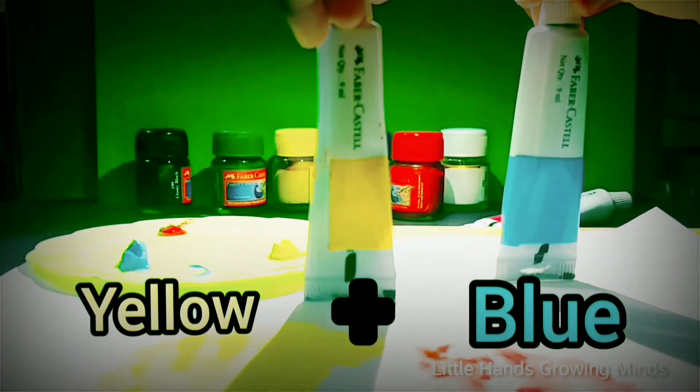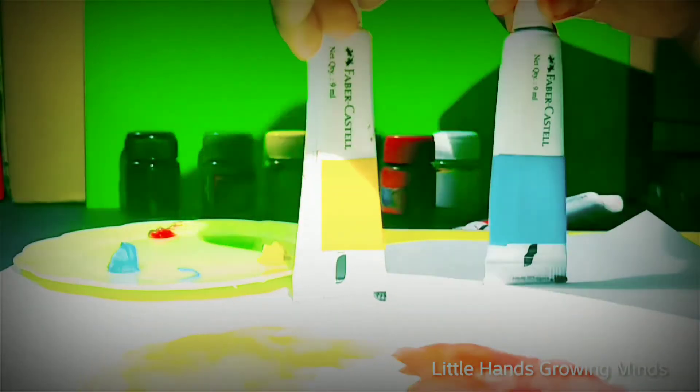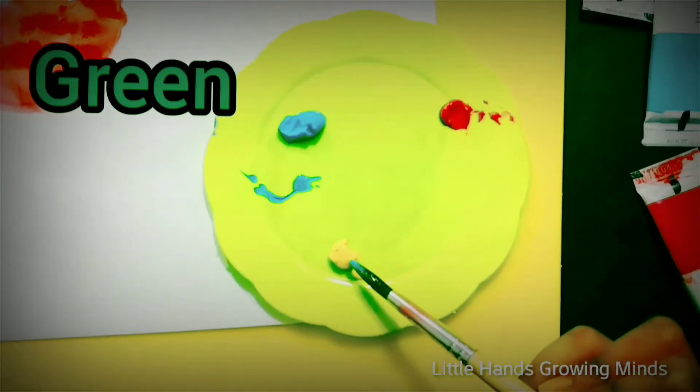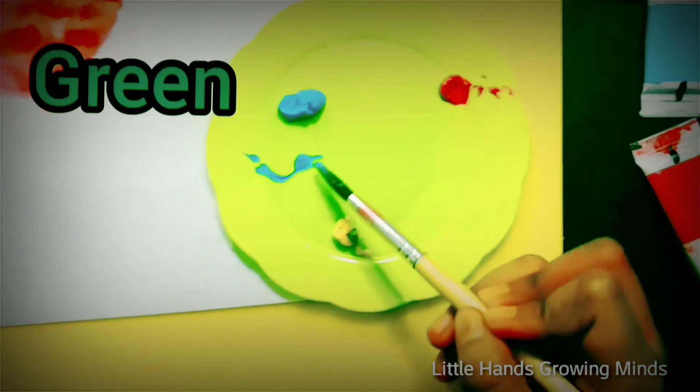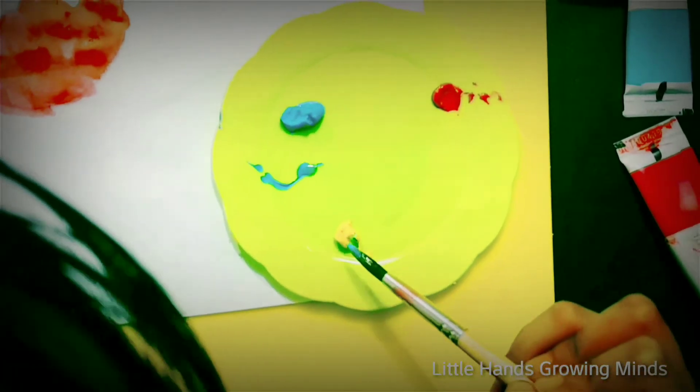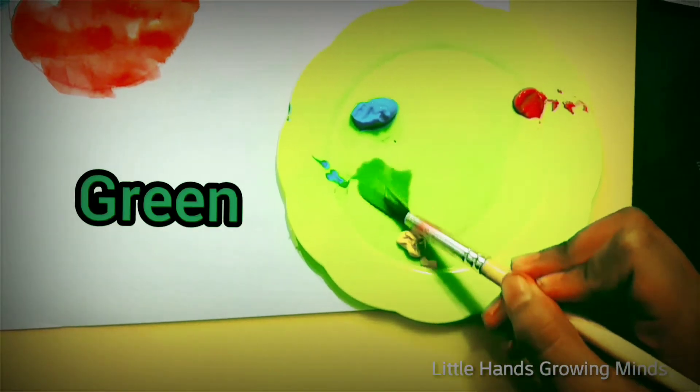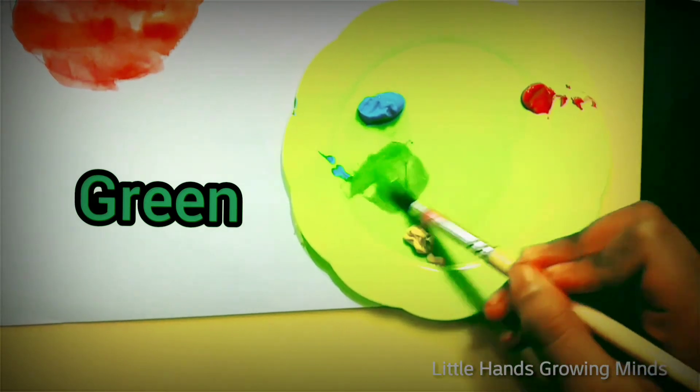Let's mix yellow and blue together and see what it makes. Green. Now we can paint with green.